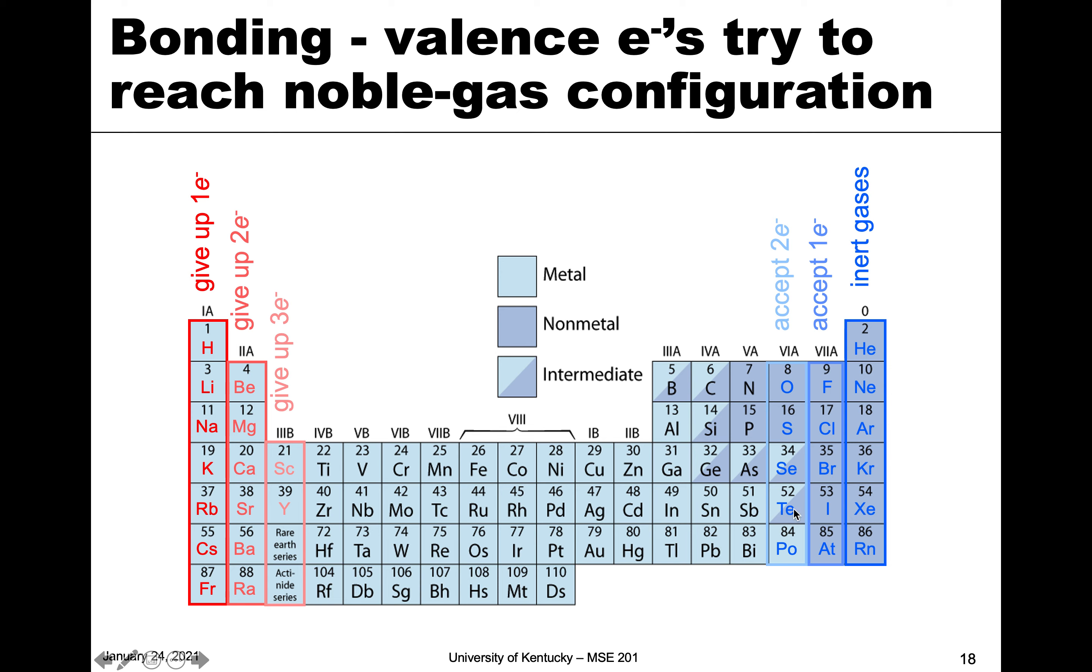If you're in this column with oxygen and sulfur, you would have to add two. That's the quickest way to get to this type of configuration. Over here on the other extreme side, hydrogen, lithium, sodium, potassium, all of those want to give up one electron. And that would form them into this type of configuration.